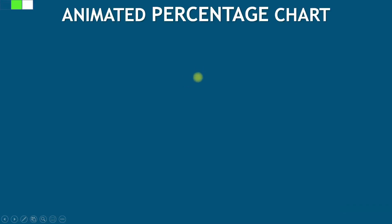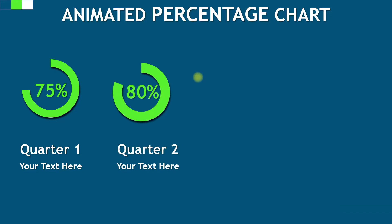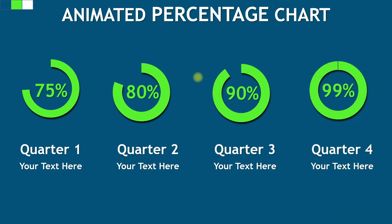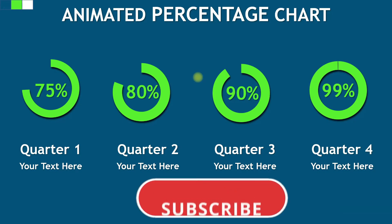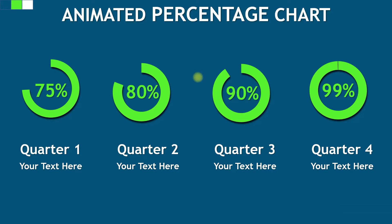Once you click on this particular slide you are going to have the first percentage slide where you can see the first quarter result, then on second click you can see the second one, on third you are going to see the third percentage and finally the fourth one. You can use this beautiful infographic to show project status for each quarter, show the performance of individuals or teams, or to increase or decrease the efficiency of a group or a person. So without wasting time, let's get started.